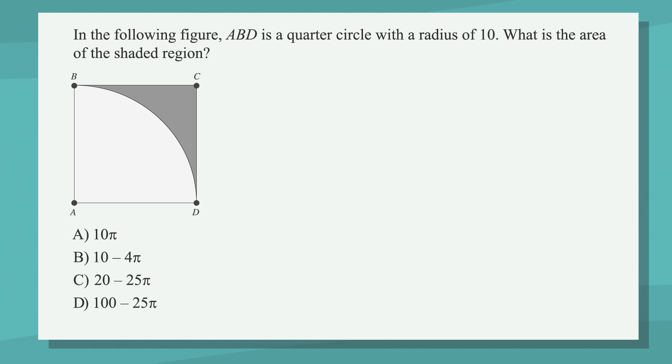Here's the question. In the following figure, ABD is a quarter circle with a radius of 10. What is the area of the shaded region? The answer choices are A, 10π, B, 10 minus 4π, C, 20 minus 25π, and D, 100 minus 25π. Now it's your turn. Ready? Set. Pause.